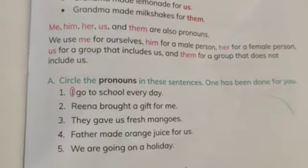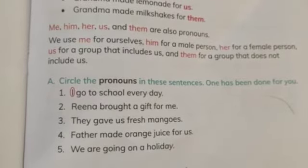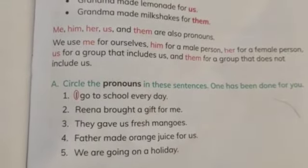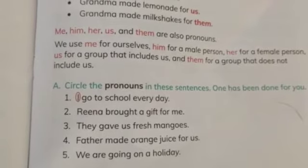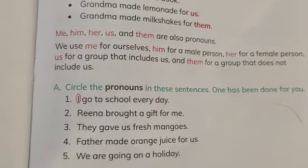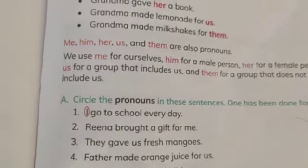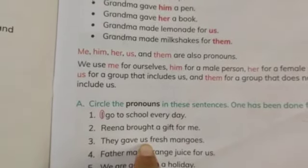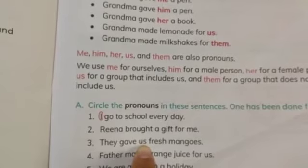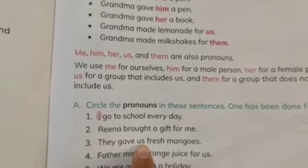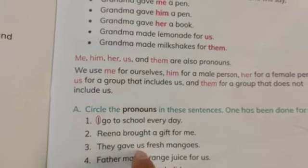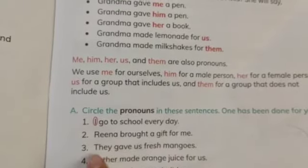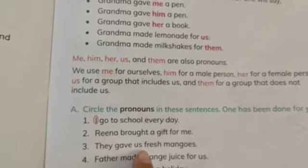Next, point number three: they gave us fresh mangoes. What are the pronouns in this sentence? They is used for a group of persons in which you are not included, so they is a pronoun. And us is also a pronoun — us means you are included in that group. So both they and us are pronouns in this sentence.